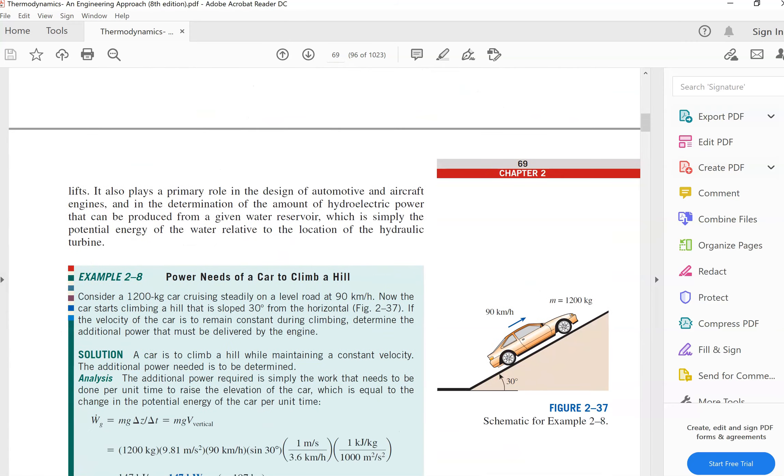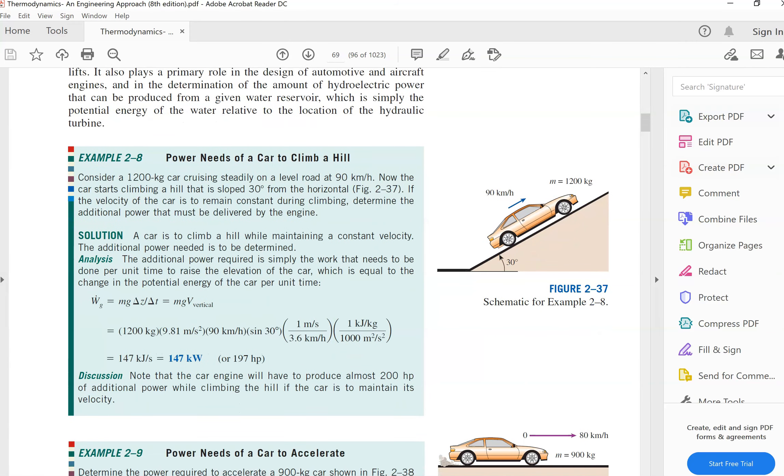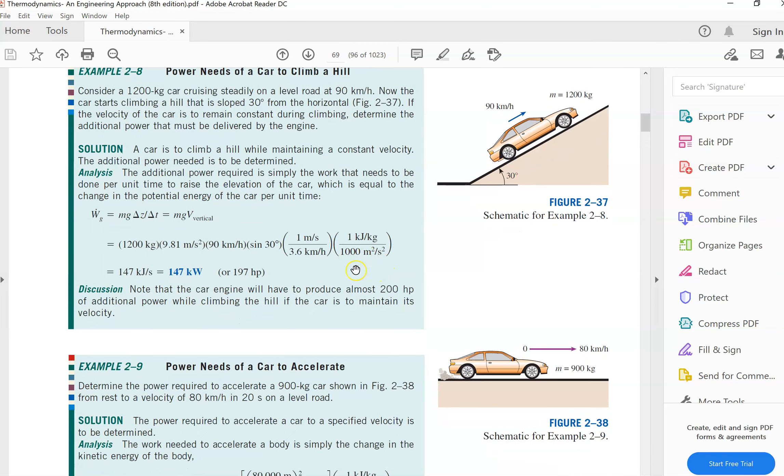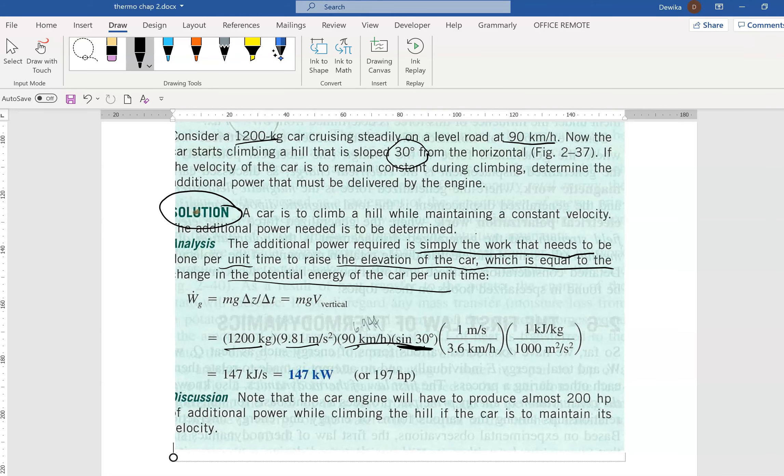We have a slope of 30 degrees and 90 km/h. When you multiply these, this is actually converting to the height - the vertical height. We take sine 30 because we want the vertical height for mgh. This part is the conversion from m/s to km/h.